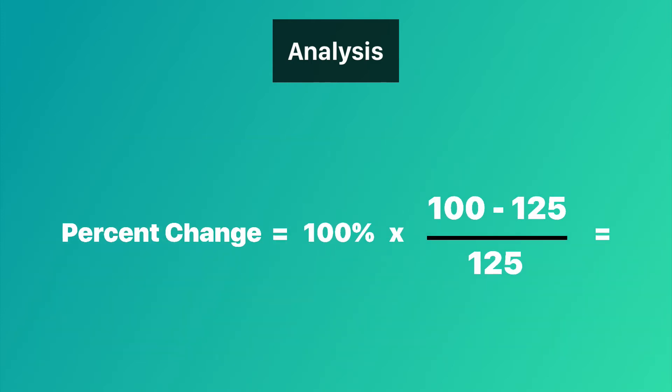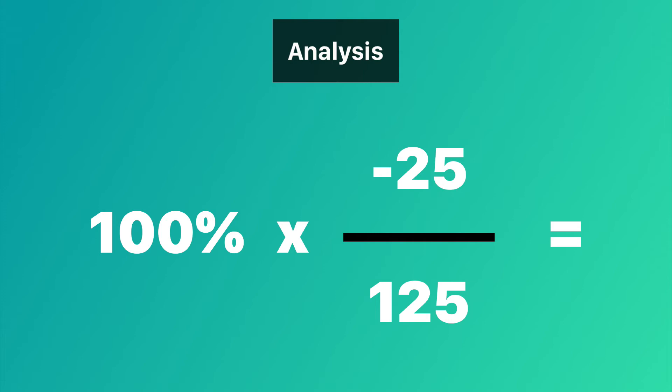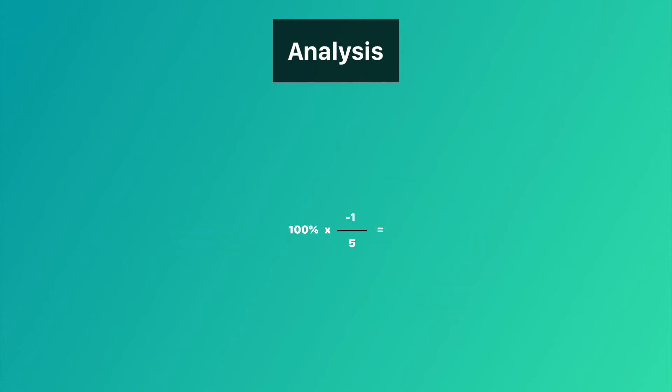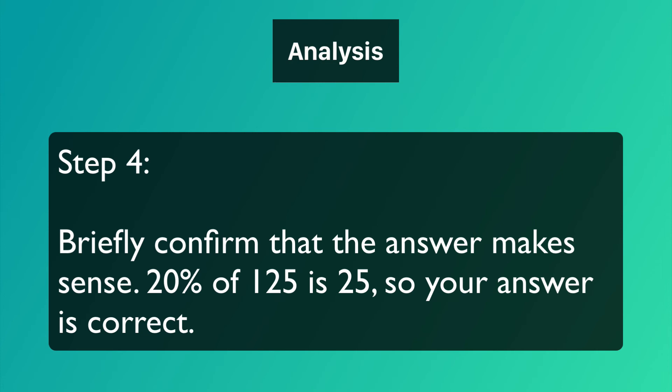First thing we do is set up the problem inside of the formula that we stated before. And then we simplify the top numerator by subtracting. We further simplify by applying the fraction rule. 100 times negative 1 over 5 equals negative 20. Since the result is negative, you know that there was a price decrease. The answer is negative 20%. Step 4. Briefly confirm that the answer makes sense. 20% of 125 is 25. So your answer is correct.